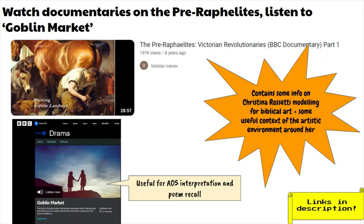There are some great documentaries on the Pre-Raphaelites — links in the description — and that's the environment Rossetti was surrounded by, with her brother and the other artists in that school. That'll give you brilliant contextual AO3 detail: for example, why we get those jewel-like colours in 'A Birthday' can be linked to the Pre-Raphaelite painting style. The programme also focuses on her Tractarian faith, as she was used as a model for biblical depictions.